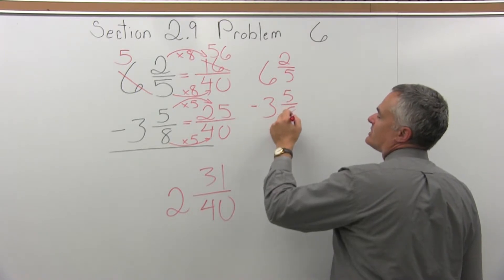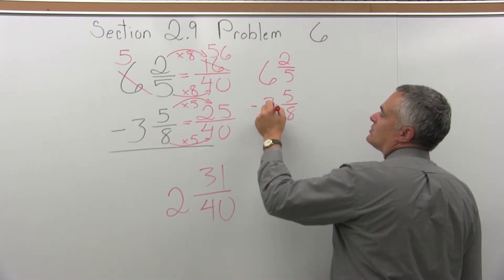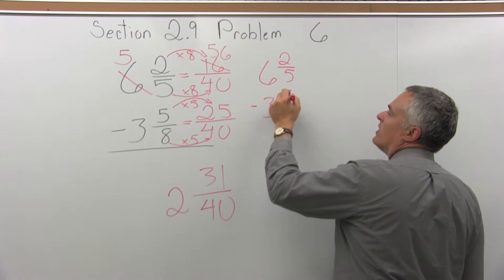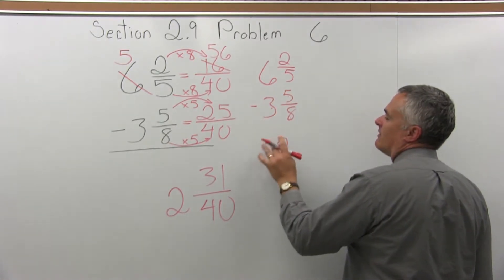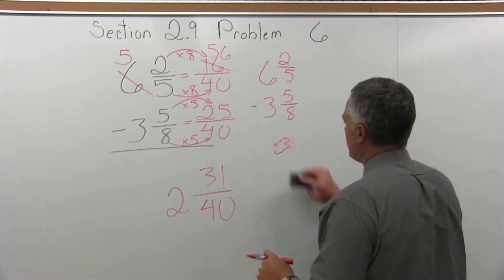Let's make them both improper fractions. 8 times 3 is 24, 24 plus 5 more is 29. So I will have 29 over 8 as the lower fraction.